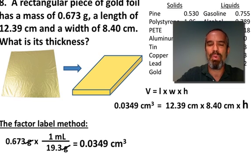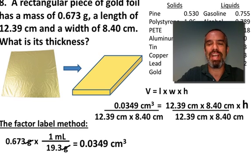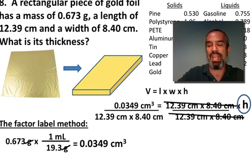So length times width times height, that equals volume. We have the volume, 0.0349 cubic centimeters. We know the length. We know the width. We're going to solve this for h, the height, which will be the thickness. Well, clearly, we can divide both sides by both the 12.39 centimeters and the 8.40 centimeters. They'll completely cancel out on the right side. That'll leave us with just h, what we're trying to solve for.